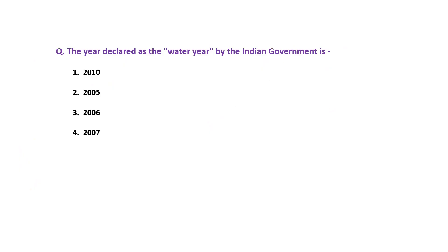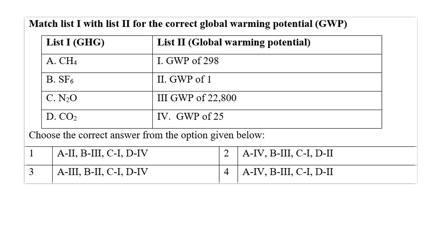Question nineteen: Which year was declared as the water year by the Indian government? The right answer is 2007. Question twenty: Match the greenhouse gases with their global warming potential. The GWP of CO2 is 1. The GWP of methane is 25. The GWP of nitrous oxide is 298. And the GWP of sulfur hexafluoride is 22,800. So for A the answer is 4, for B it is 3, and for C it is 1. Options 2 and 4 in the question have the same matching, so both are correct answers.